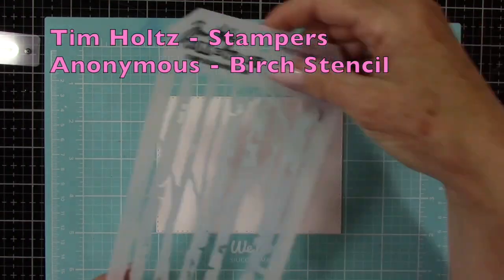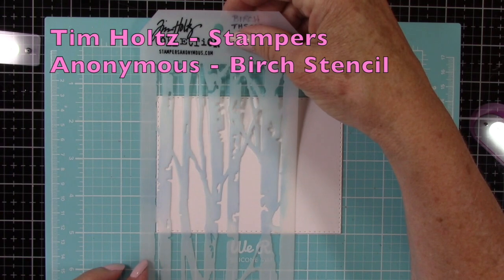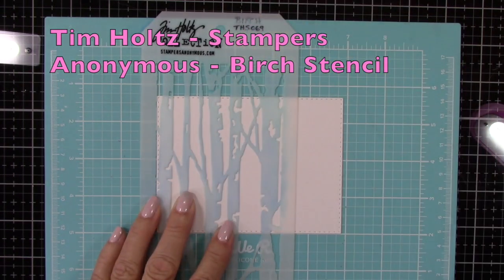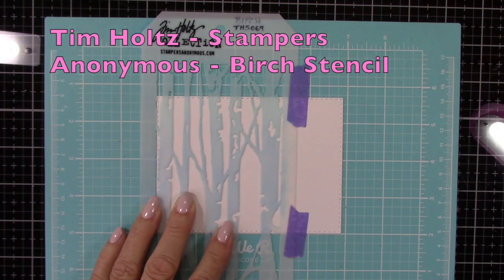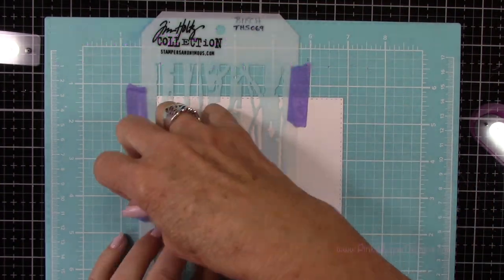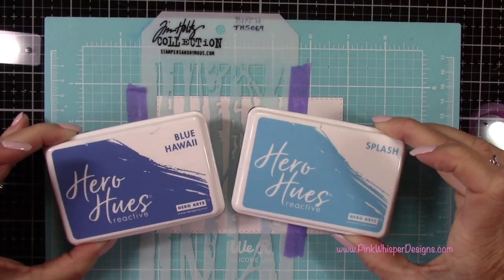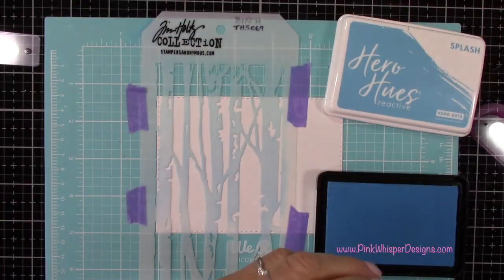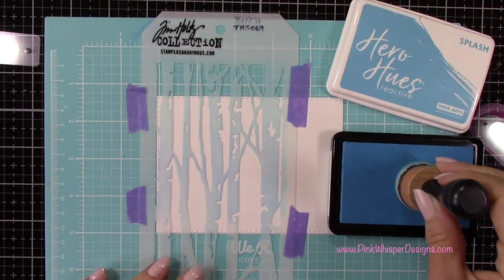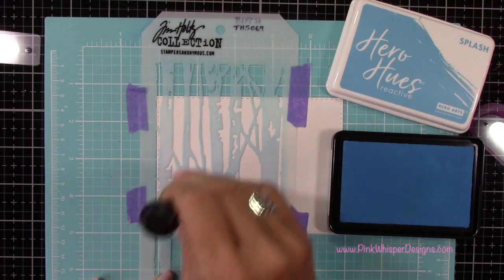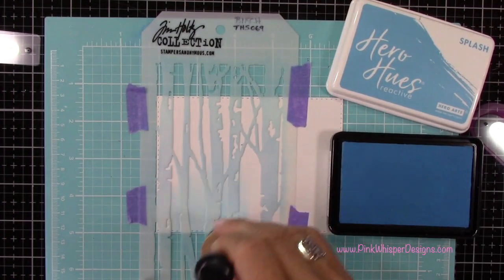I'm going to go ahead and place that on my We Are Memory Keeper silicone mat and then I'll grab this stencil here. This is the Tim Holtz Stampers Anonymous Birch Stencil. So I'm going to need to move this stencil a couple of times here to get this entire panel. For ink I'm using the Hero Arts Reactive Ink Pads and I'm going to start with the splash.